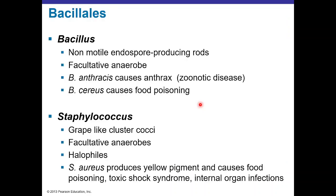Bacillales are non-motile endospore-producing rods that are facultative anaerobes. Bacillus anthracis causes anthrax, a zoonotic disease transmissible between cattle and humans. Bacillus cereus can produce toxins in rice causing food poisoning. Staphylococcus forms grape-like clusters of cocci, are facultative anaerobes, and are halotolerant. Staphylococcus aureus produces a yellow pigment in artificial media and can cause food poisoning, toxic shock syndrome, osteomyelitis (bone marrow infection), and myocardial infections.